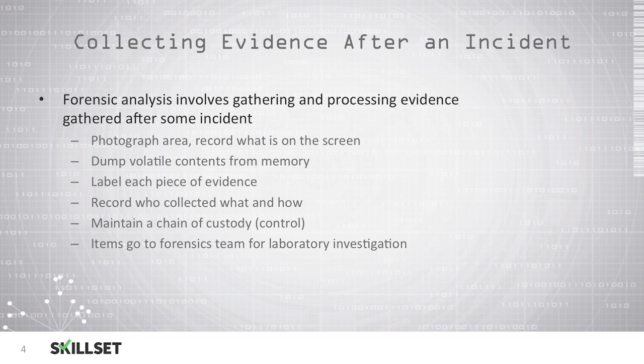Just because we're conducting an electronic investigation does not mean that our suspect did not print anything on paper, which may be located in their office. Every piece of evidence needs to be labeled with a case number and an identifier such as an item number so that you can identify individual devices. For the chain of custody, you should record who collected and packaged the evidence and how it was conducted, maintained on a chain of custody form. The item should then be transported to a forensics lab for further investigation and analysis.